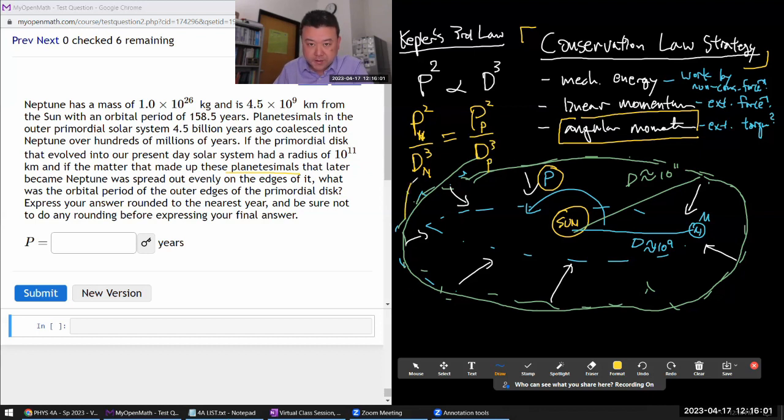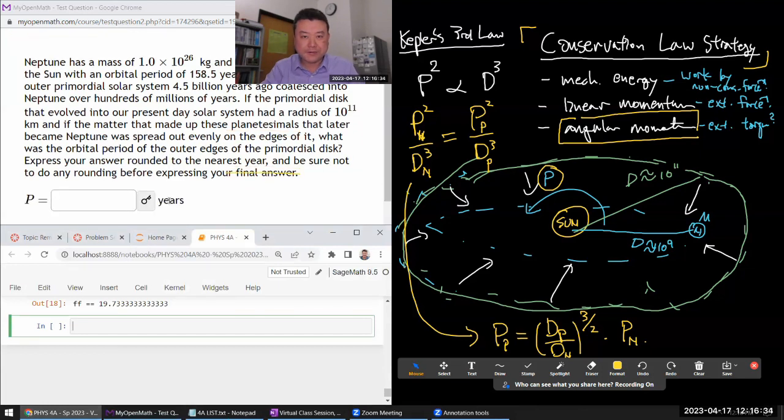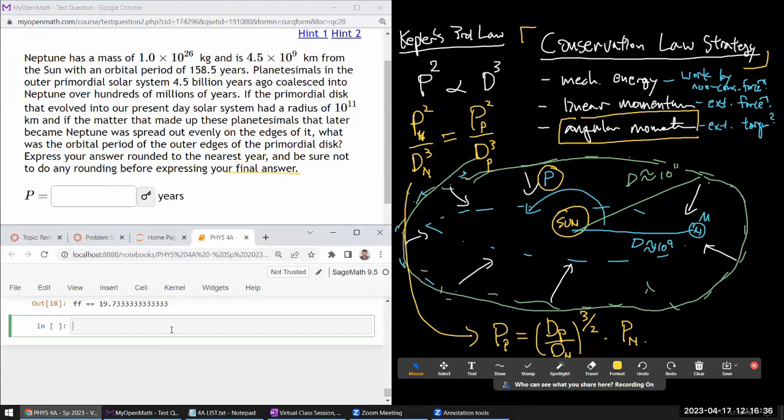So we'll say that's equal to the period of the planetesimals squared divided by the orbital distance of planetesimals cubed. So solving this for the period, I can do that in my head. Period of the planetesimals is the distance of the planetesimals over the distance of the Neptune raised to the power of - and you have to be careful, I took square root - so it's the power of three halves times period of Neptune. Let's see if that works.